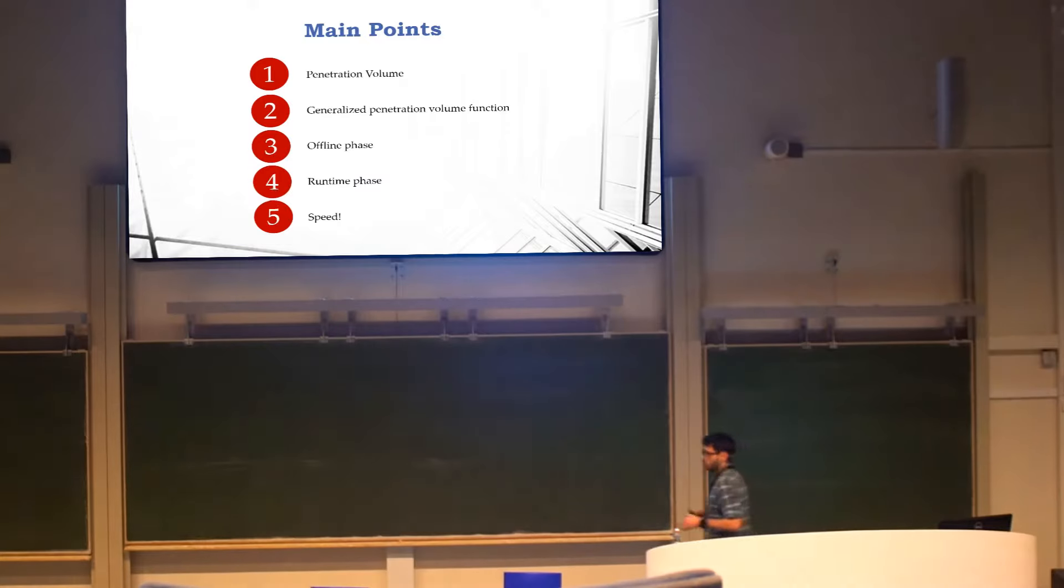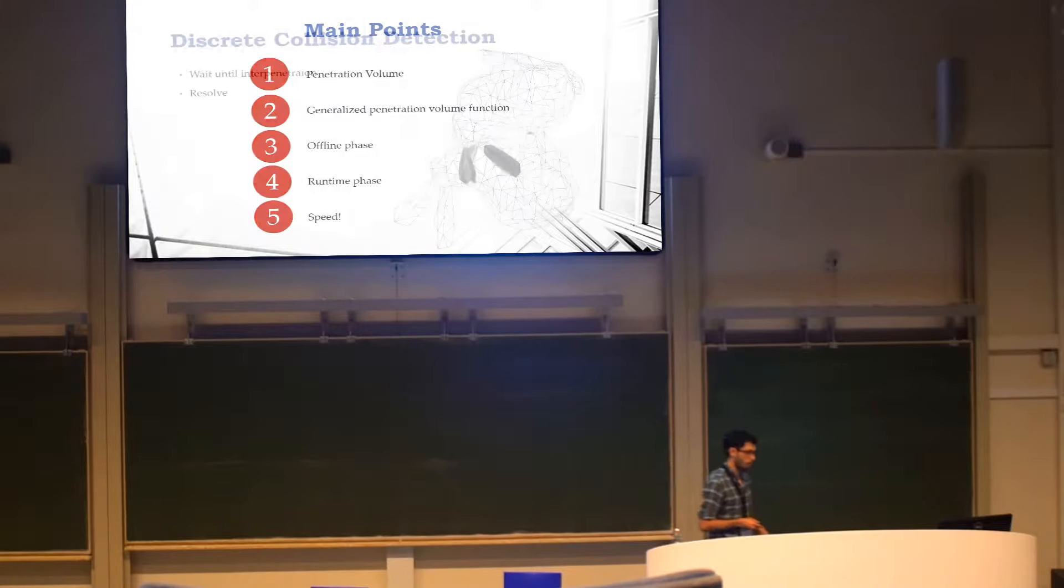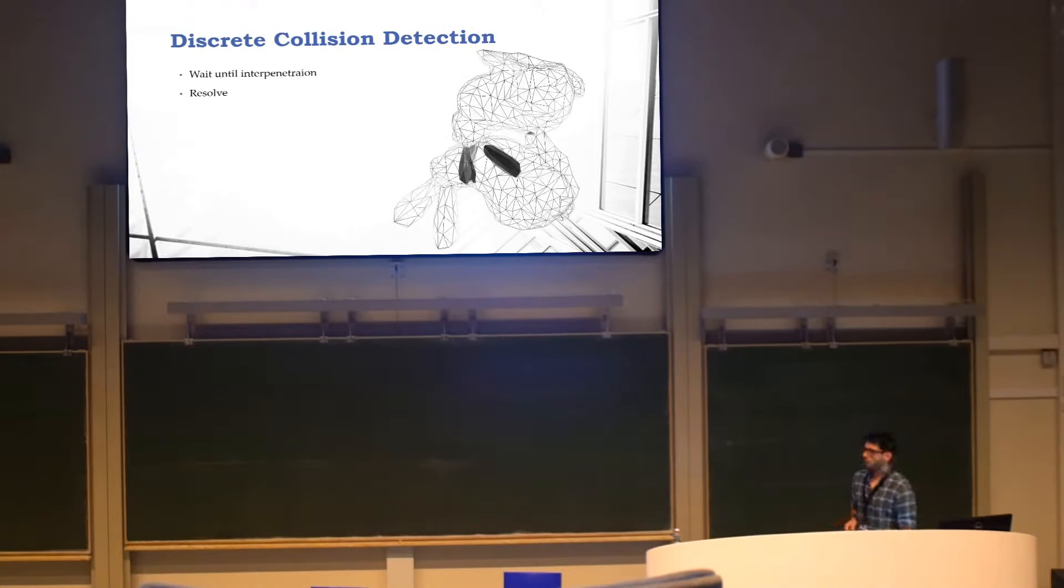I'm going to focus my talk about five big topics. The first one being that we're using the penetration volume, and I'll explain what that is, and mainly why that is. And the second is generalizing this penetration volume to a broader function. Then I'll talk a bit about what we did offline and in runtime, and then what kind of speed you can expect. Like virtually all time-critical applications, we're taking the discrete approach to collision detection, which means we don't try to prevent objects from colliding in advance. Rather, we wait until it's cheaper to detect that they have already interpenetrated and handle it then. But that does require that we have some measure of their interpenetration.